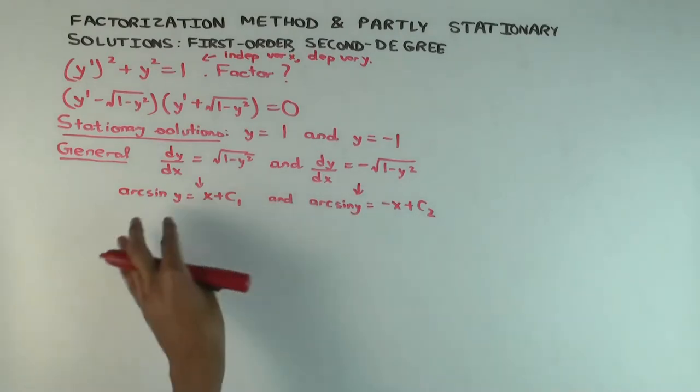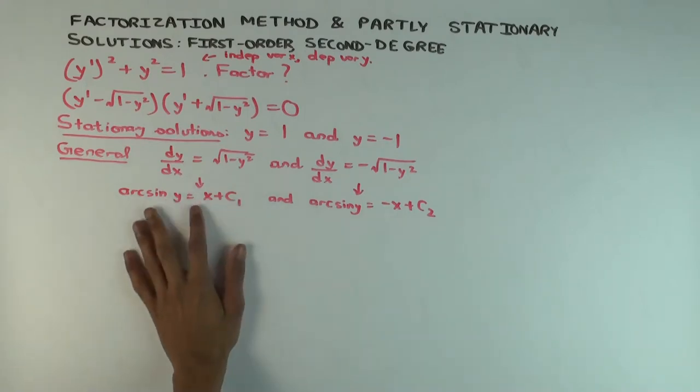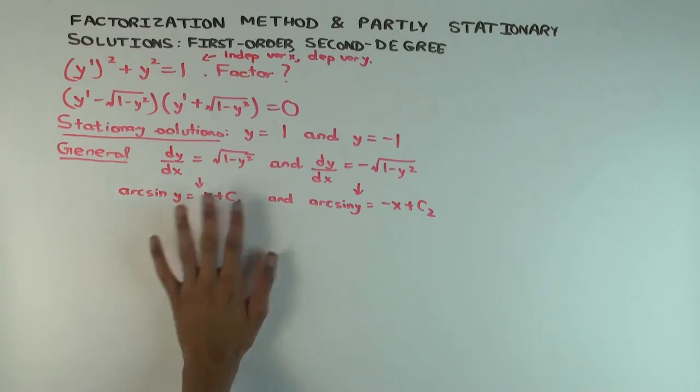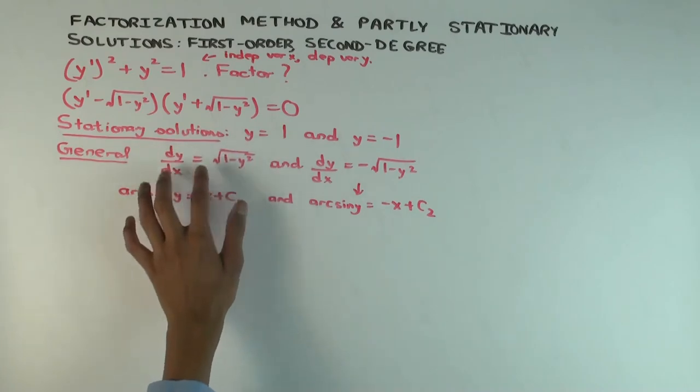You have these two solution families. What's actually happening in these solution families? If you just had this solution family, this would be valid only within a certain interval: minus c1 minus pi over 2 to minus c1 plus pi over 2. There's actually a separate video where we do just this differential equation, though we use different notation.